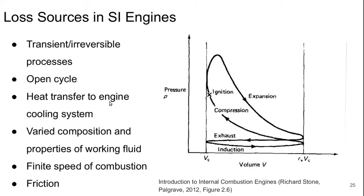Welcome to Part 4 of Lecture 4 of Aerospace Propulsion. We're trying to think about some of the loss sources of spark ignition engines, and some of these include the following. The fact that we're dealing with transient and irreversible processes, which the thermodynamic cycle model doesn't capture.